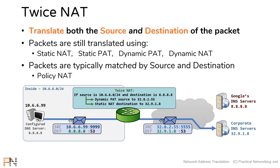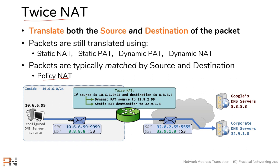When doing twice NAT, you're typically also matching based upon the source and the destination. Therefore, it is also a policy NAT. So what you have here is a policy NAT because you're matching on source and destination, and a twice NAT because you're translating the source and the destination. Typically when you're doing a twice NAT, you're also going to be doing a policy NAT, because it doesn't make sense to translate all outbound packets to a specific IP address — but it does make sense to translate a specific IP address to another IP address.